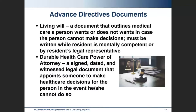Advanced directive documents include the living will, which is a document that outlines the medical care a person wants or does not want in case the person cannot make those decisions. A living will must be written while the resident is mentally competent or by the resident's legal representative. A durable healthcare power of attorney is a signed, dated, and witnessed legal document that appoints someone else to make healthcare decisions for the person in the event that he or she cannot do so.